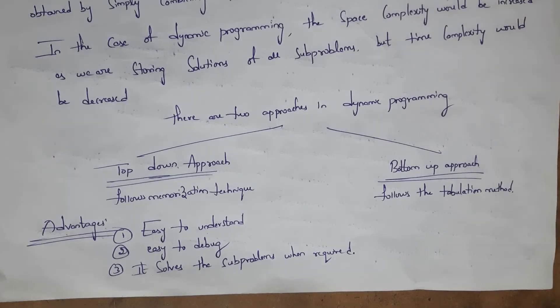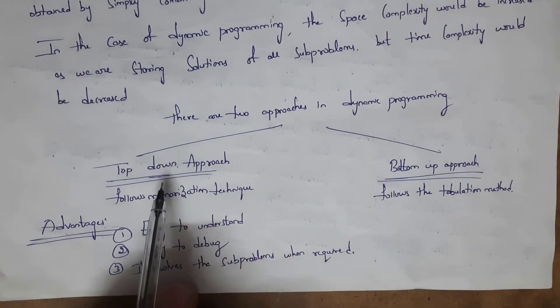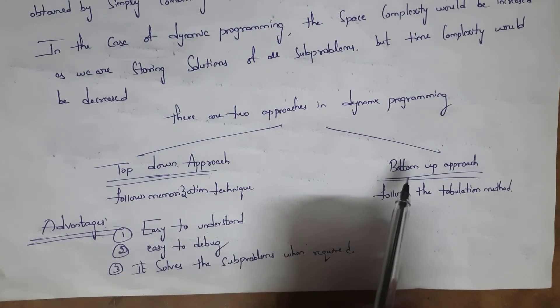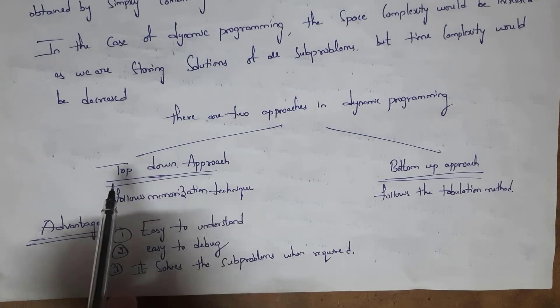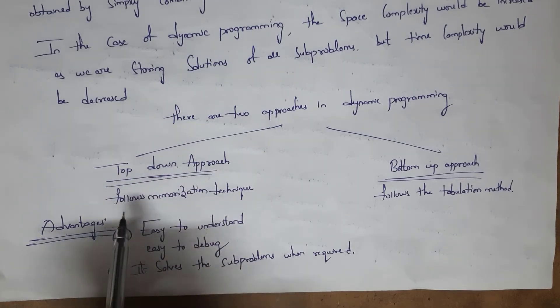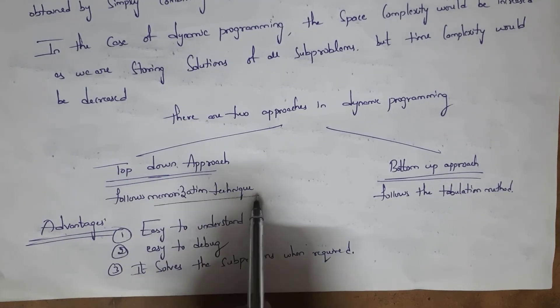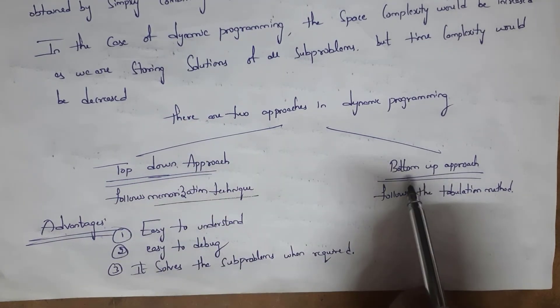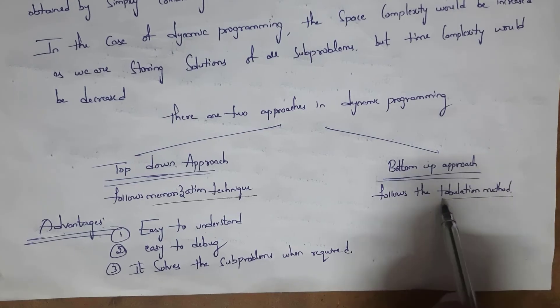There are two approaches in dynamic programming. The first one is the top-down approach and the next one is the bottom-up approach. The top-down approach follows the memoization technique, whereas the bottom-up approach follows the tabulation technique.